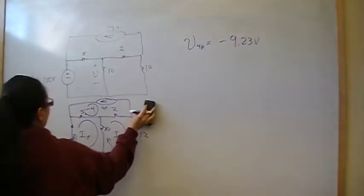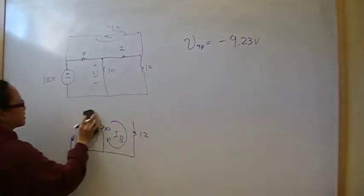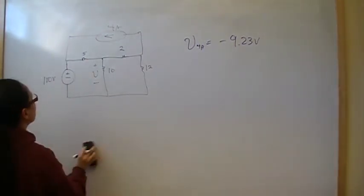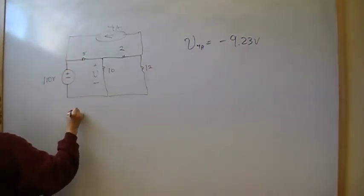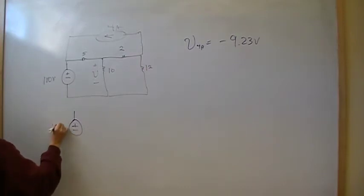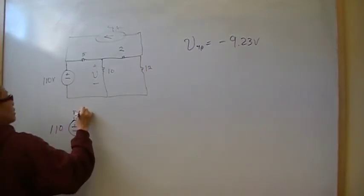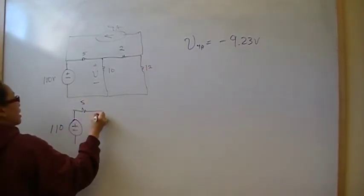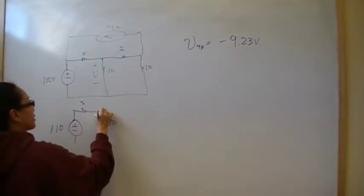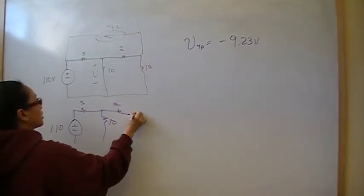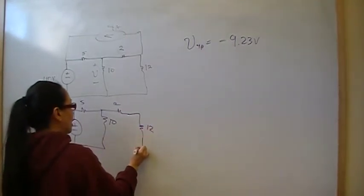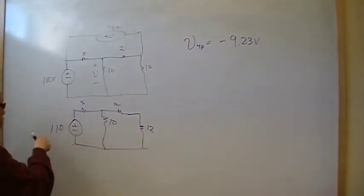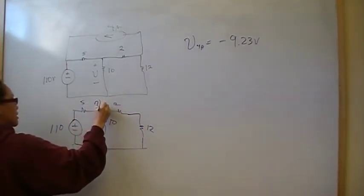Now we're going to open the 4 amp source and consider only the 110 volt source. So when we open that, our new circuit looks like this. We've got 110 volts. This is going to be 5. We've got 10 here, 2 here, 12 here. So now we're going to find out what's being contributed by the 110 volts. We're going to call this V110.